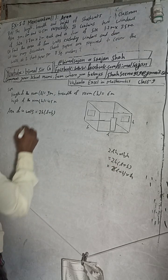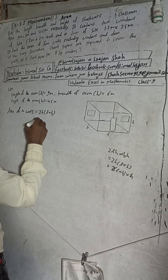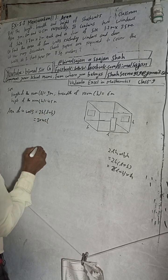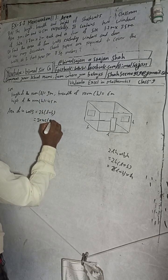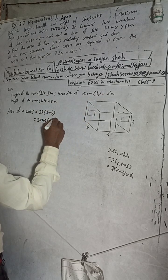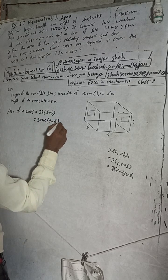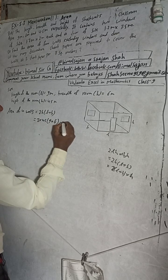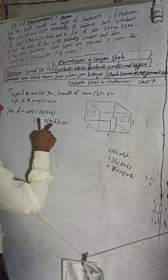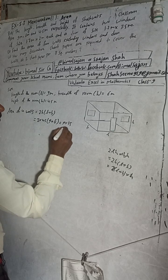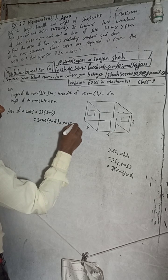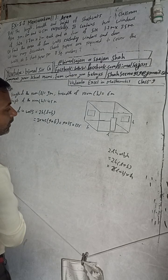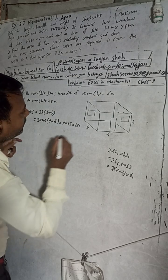Now we apply the formula: 2 × 4.5 × (9 + 6). The sum of 9 plus 6 is 15. So 4.5 × 2 × 15 — that gives us 135. Area of four walls is 135 square meters.